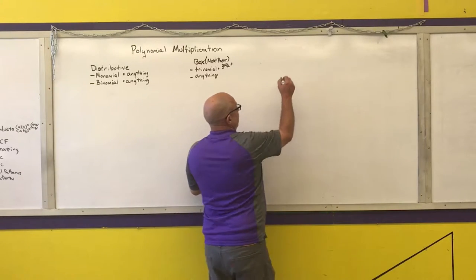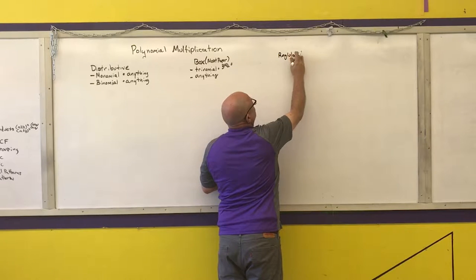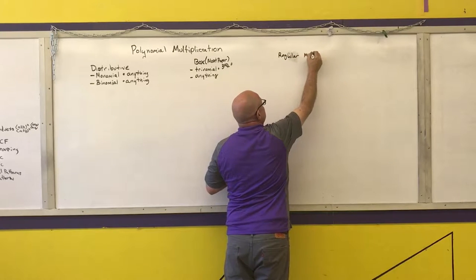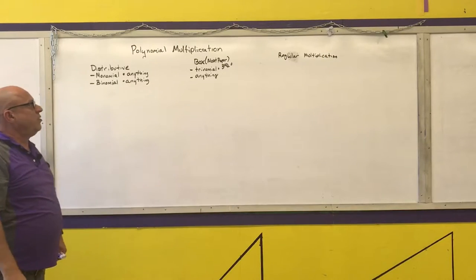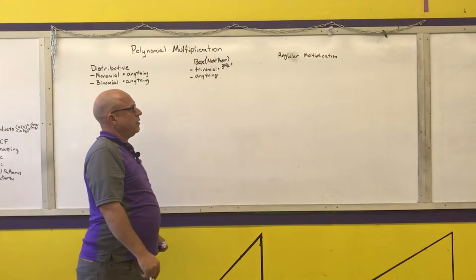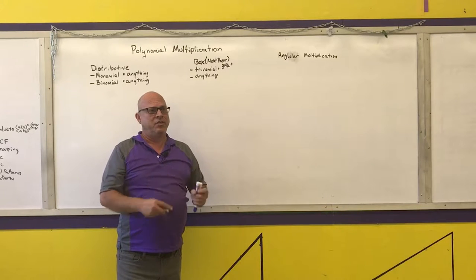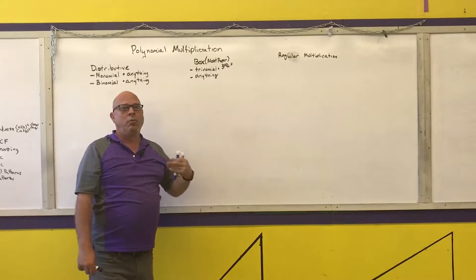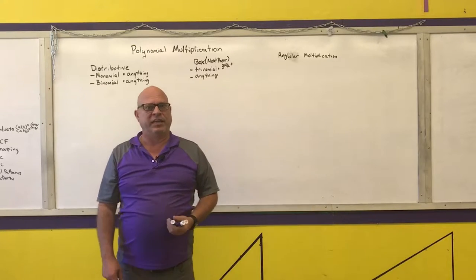My preference, though, is regular multiplication. That is the recommended method I have for every single polynomial multiplication, with the exception of a simple monomial times anything, or when we're finding a binomial times a binomial — and I'm going to show you the special case for that at the end.